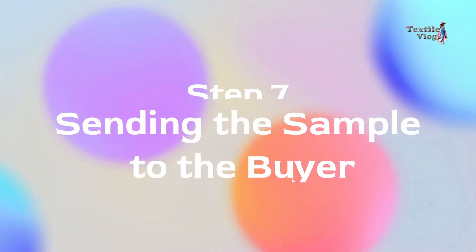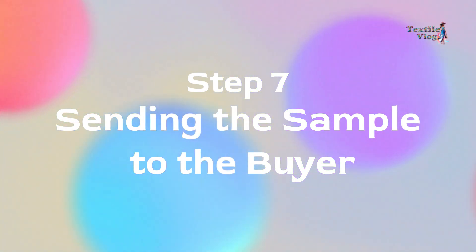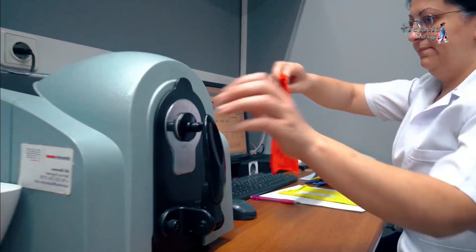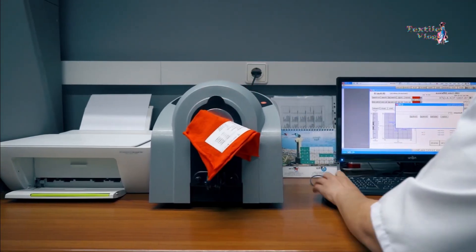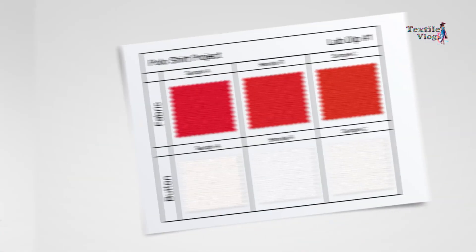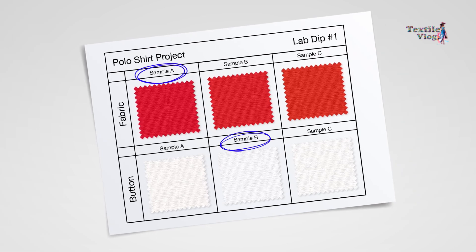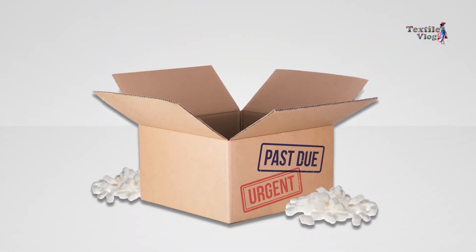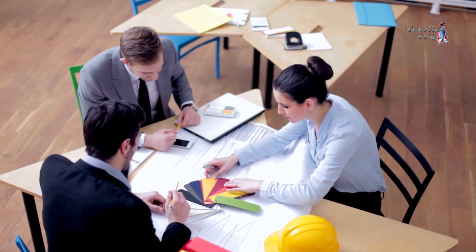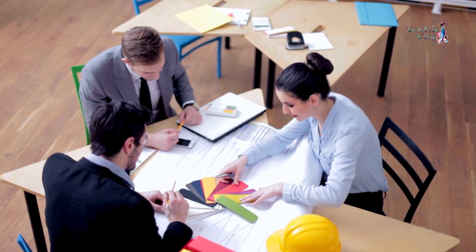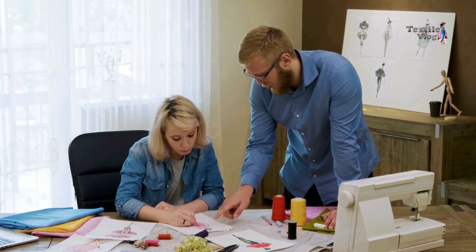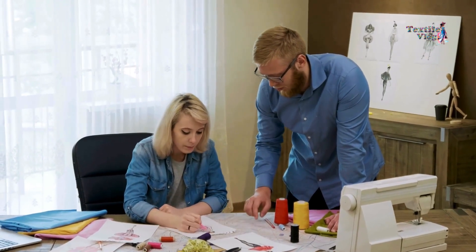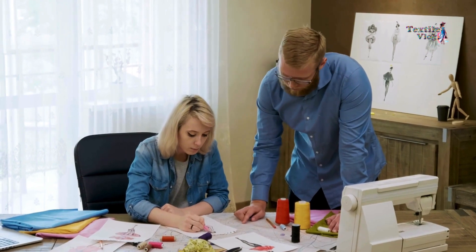Step 7: Sending the Sample to the Buyer. If the sample passes all tests and is a perfect match, it's sent to the buyer for final approval. This is the last step before moving on to bulk production, and this is where the buyer gives their final thumbs up — or in some cases, requests a tweak here and there.